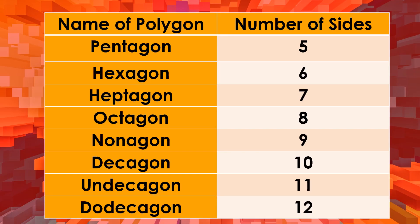So we have the names of polygons and their number of sides. Pentagon has five sides — from the word 'penta' meaning five. Hexagon means six, heptagon means seven, octagon means eight, nonagon means nine, decagon means ten, hendecagon means eleven, and dodecagon means twelve.